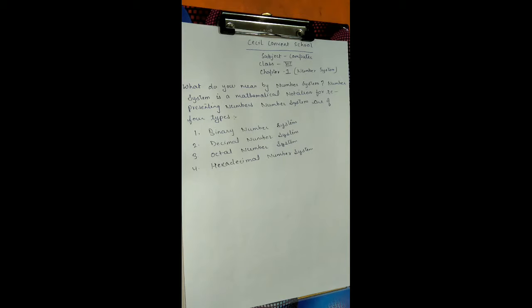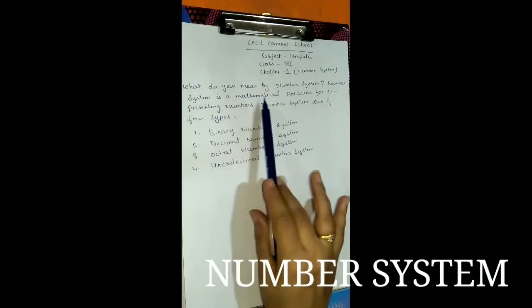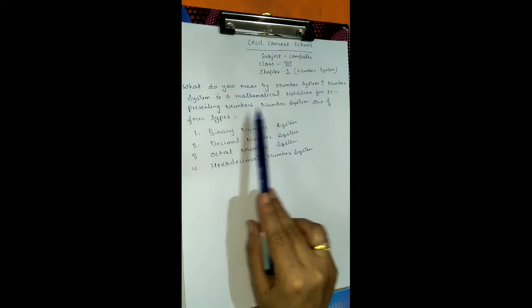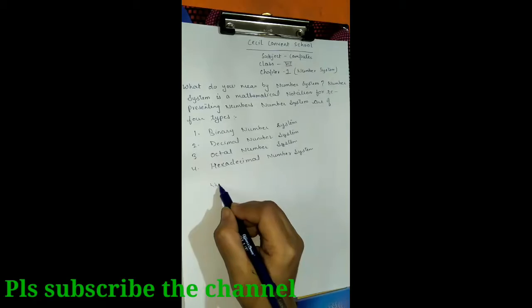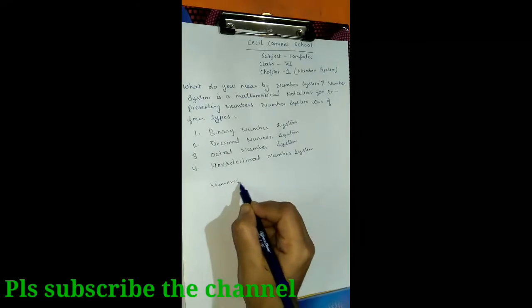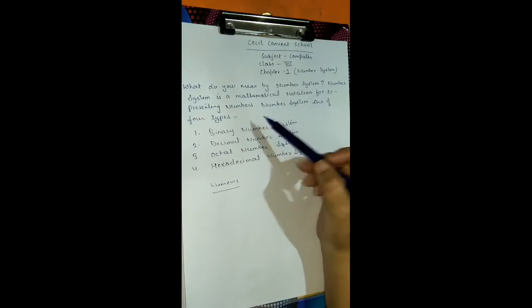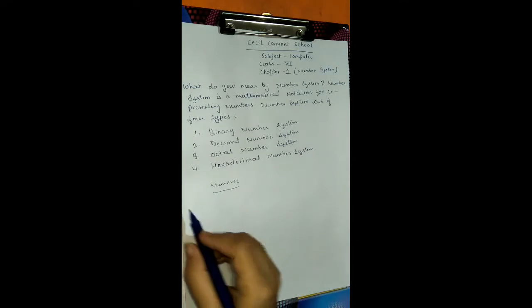What do you mean by Number System? Number System is a mathematical notation for representing numbers — we are dealing with numeric values only. Number systems are of four types: Binary Number System, Decimal Number System, Octal Number System, and Hexadecimal Number System.